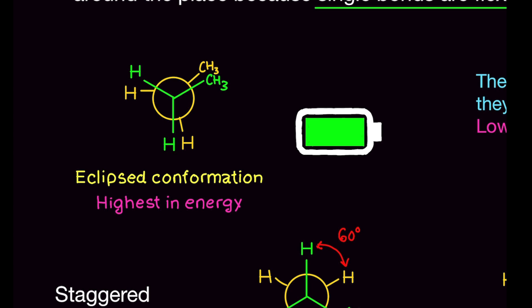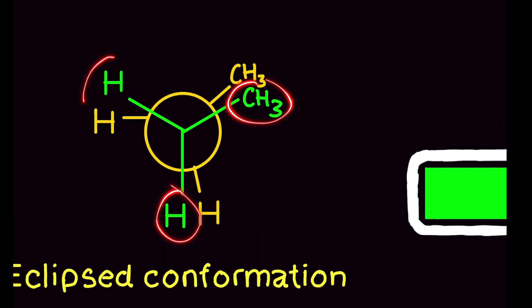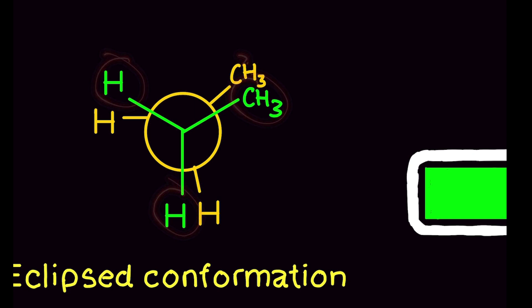In the Avatar clip I showed, Aang and Sokka are looking for the solar eclipse to know when to invade the fire nation. I superimposed hydrogens on the sun and the moon, and you could see them moving toward each other. Eventually the moon covers the sun — they completely eclipse each other. That's exactly what is happening in an eclipsed conformation: the groups are essentially covering each other, eclipsing over each other.